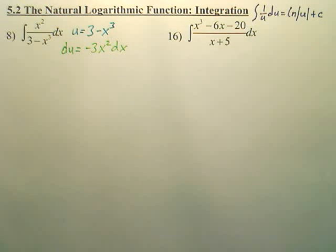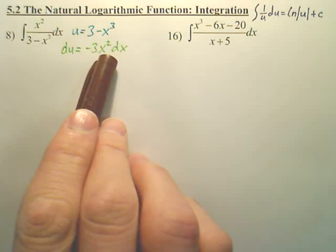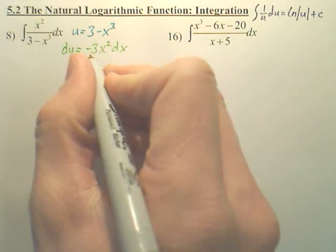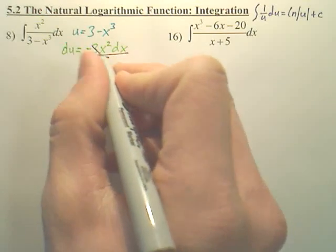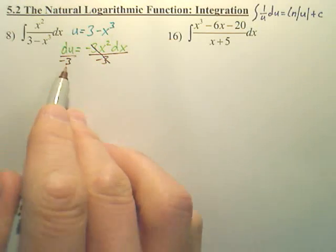From that, I need just x squared dx, so if I want this just to be x squared dx, I have to move over the negative 3. I have x squared dx is du over negative 3.